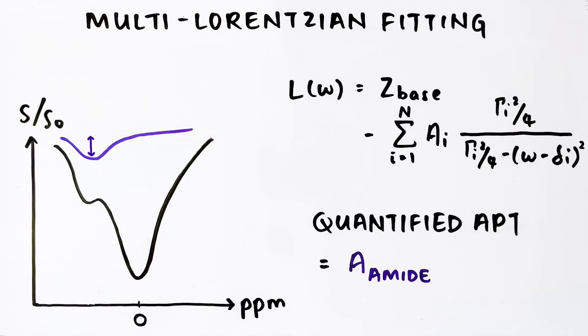Both LDA and multi-Lorentzian fitting are Lorentzian line-shape model-based quantification methods, which are comparatively faster than other model-based methods. However, the fitted parameters of this model do not carry any physiological meaning and describe only the shape of the Z-spectrum, such as the amplitudes and line widths of the CEST contributions.